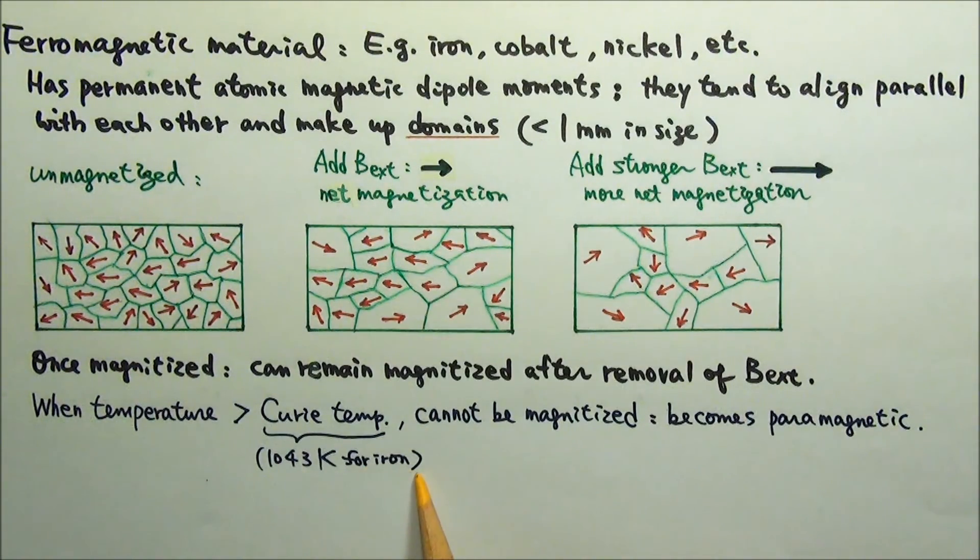For iron, the Curie temperature is 1043 kelvins. Above the Curie temperature, thermal agitation is great enough to cause random orientation of atomic moments, and the material becomes paramagnetic.